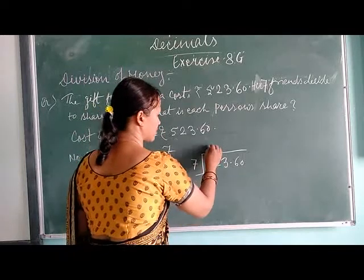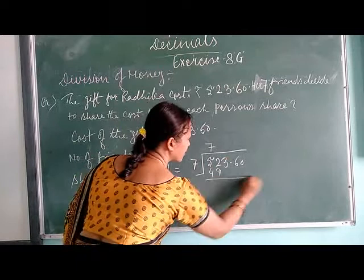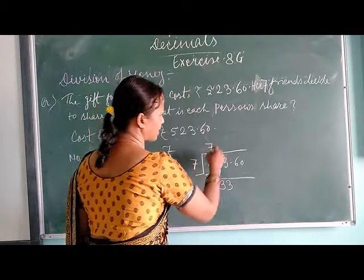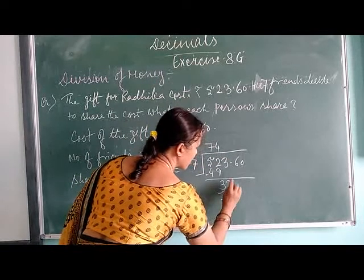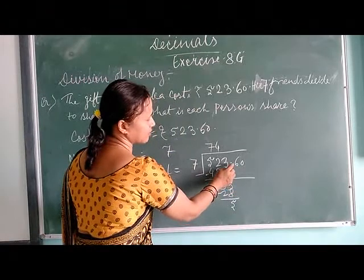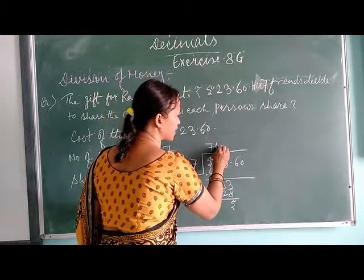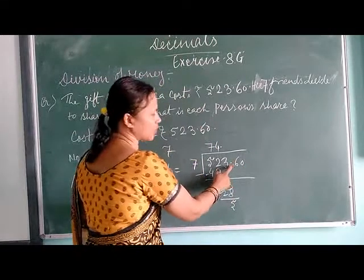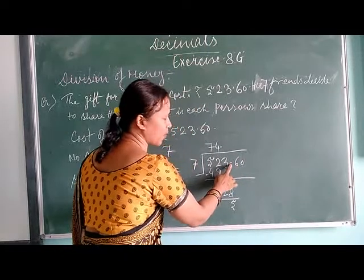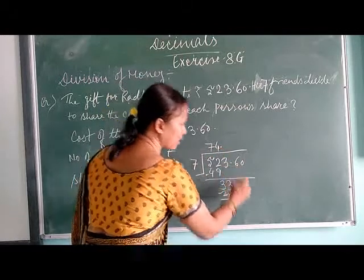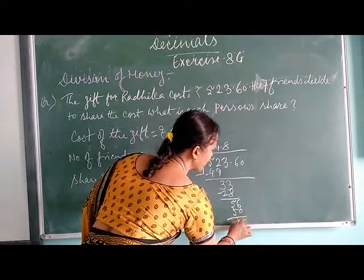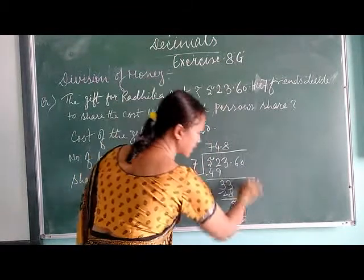Now performing the division: 52 divided by 7 gives 7, and 7 times 7 is 49. After subtraction we obtain 3. Bring down the 3. Then 7 goes into 34, giving 4, and 4 times 7 is 28. After subtraction we obtain 6. In between 3 and 6 we place the decimal point here, and bring down the 6. Then this decimal place gives 0, so the decimal point is placed accordingly.